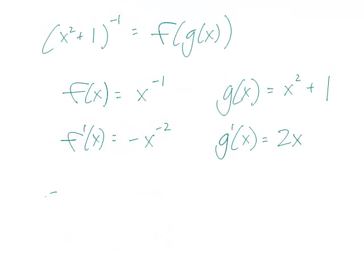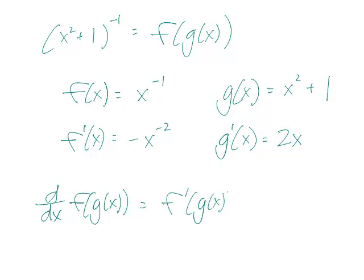And now we want to use the chain rule, so let's write the formula down again. That's f prime of g times g prime. That's the derivative of f of g. And we have all these pieces.